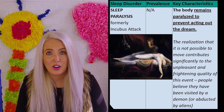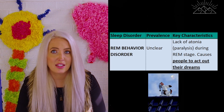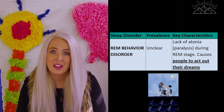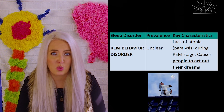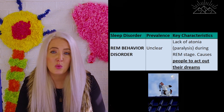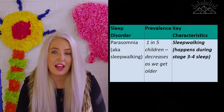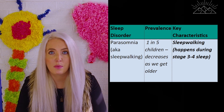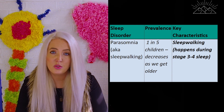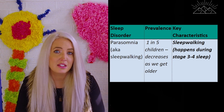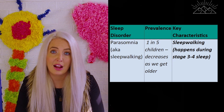REM behavior disorder is the opposite — for some people the switch that's supposed to paralyze the body during dreaming doesn't work, causing them to get up and act out their dreams. This is very dangerous because it's different from sleepwalking, where a person is partially aware of their surroundings. Someone with REM behavior disorder is still very much asleep and can injure themselves or others. Finally, parasomnia — or sleepwalking — happens in stage three deep sleep, where some people will get up and act out their dreams. It's more common in children, but we're also seeing an increased prevalence in adults due to sleep deprivation putting us into deep sleep more often.